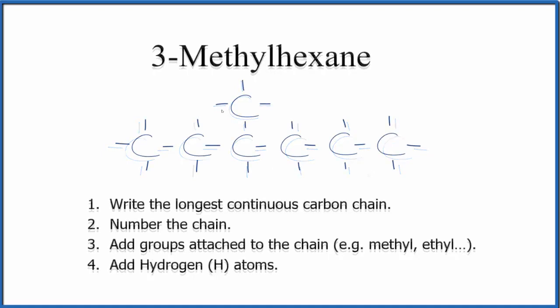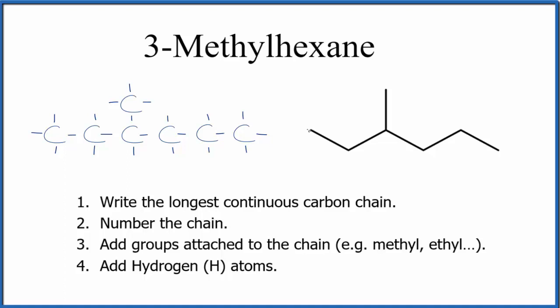Each of these carbons is attached to four things - that means it'll be sp3 hybridized, and that'll give it a structure that looks like this. So we have our parent chain of one, two, three, four, five, six carbons - that's the hexane - and on the one, two, three, we have another carbon, that methyl group.